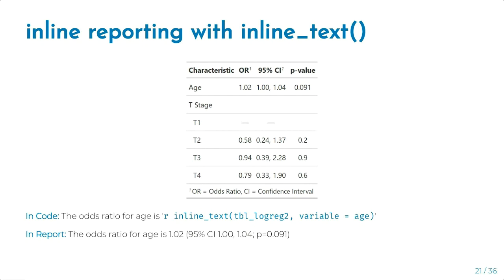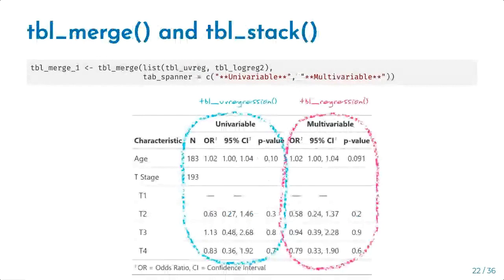tbl_merge and tbl_stack are functions that allow you to combine results from any of the other functions. For example, tbl_merge puts a regression table and a univariate regression table into one unified table to present results all at once. tbl_stack allows you to stack tables on top of each other — whether summary tables or regression tables — to combine them vertically.